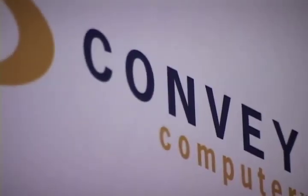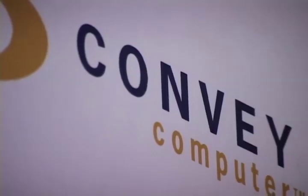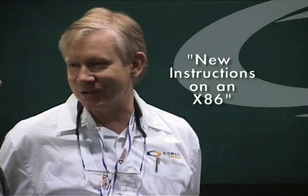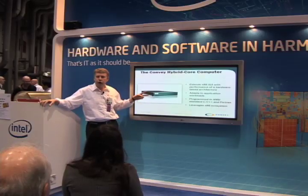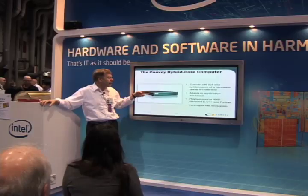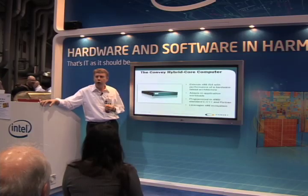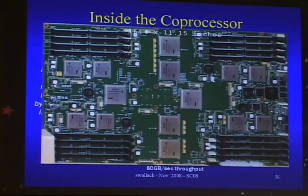There's an x86 board everywhere. We're putting new instructions on an x86. It's a 2U system — two sockets. One socket has an x86 in it, and the other socket is connected to our coprocessor.